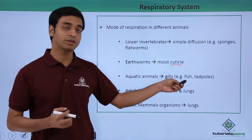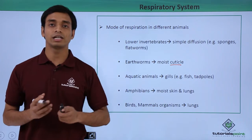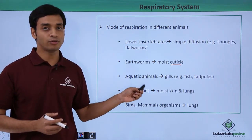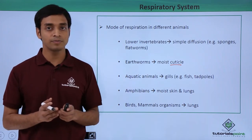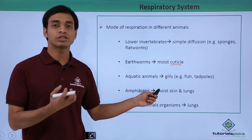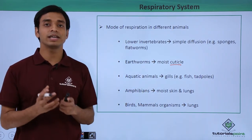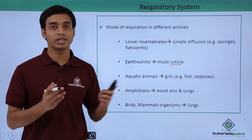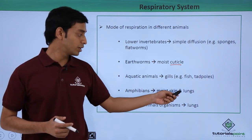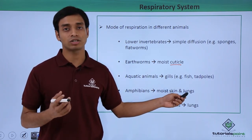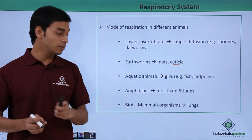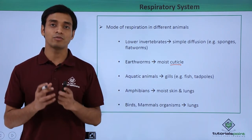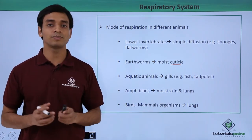For example, fish and tadpoles use gills, which actually help in their respiratory process. In the case of amphibians, for example frogs, they have an interesting system: when living in an aquatic environment they can respire through the moist skin, whereas when living in a terrestrial environment they respire through a well-organized structure known as lungs.